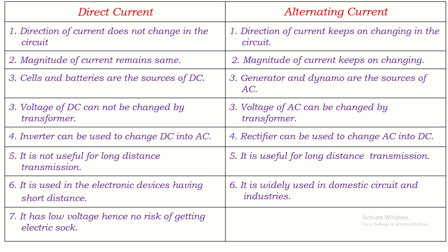Direct current has low voltage, so there is no risk of getting an electric shock from it. We do not get an electric shock from direct current because it is of low voltage. But on the other side, alternating current has high voltage, so there is a chance of getting an electric shock from high voltage AC.